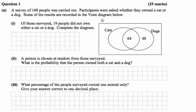So this is the 2016 Leaving Cert Ordinary Level Paper 2 and we're looking at question number 1, Part A. A survey of 168 people was carried out. Participants were asked whether they owned a cat or a dog. Some of the results are recorded in the Venn diagram below.